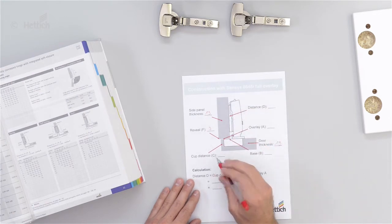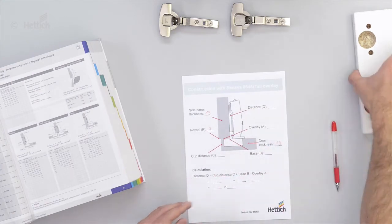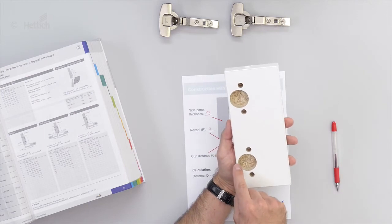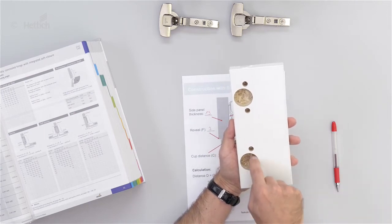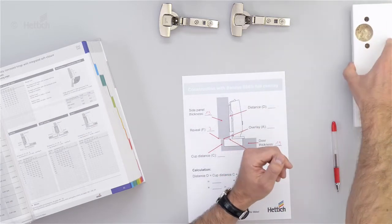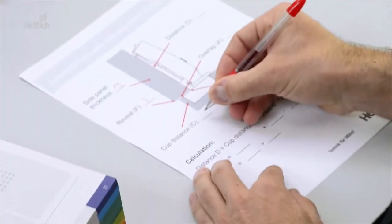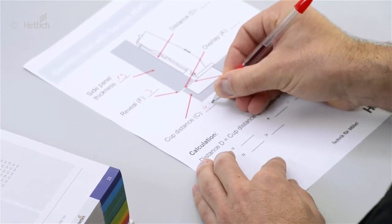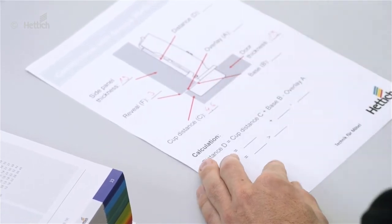Also the cup distance C, which is the distance between the hinge cup drilling and the edge of the door, 4.5 millimeters in this example.